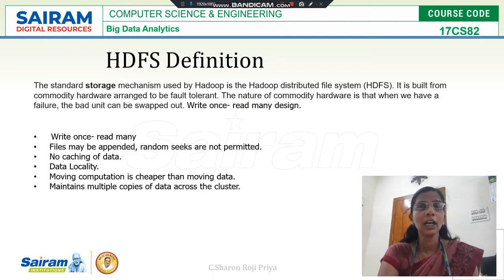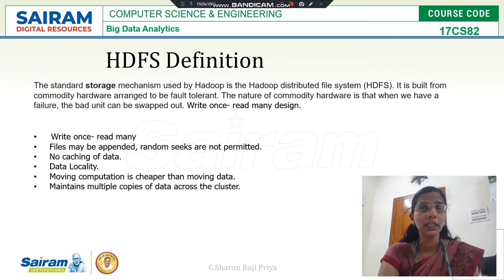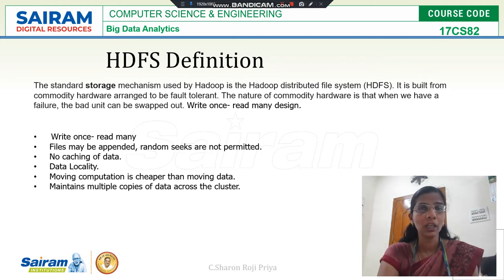Hadoop has two main parts: the storage part and the processing part. The storage part is implemented with HDFS — Hadoop Distributed File System. In this video, we can see a few features of the Hadoop Distributed File System.